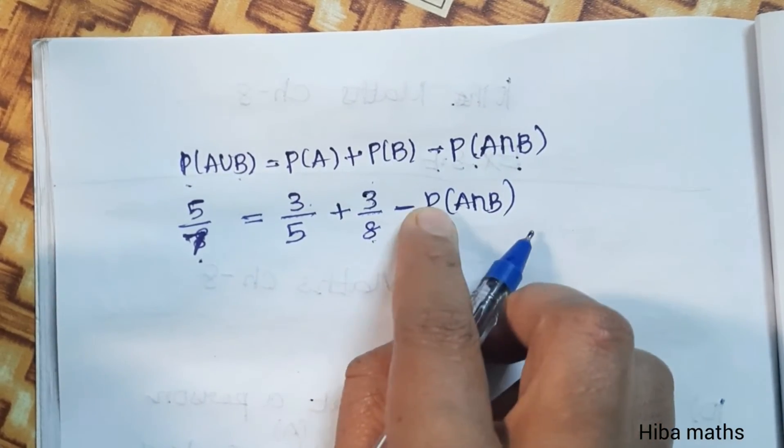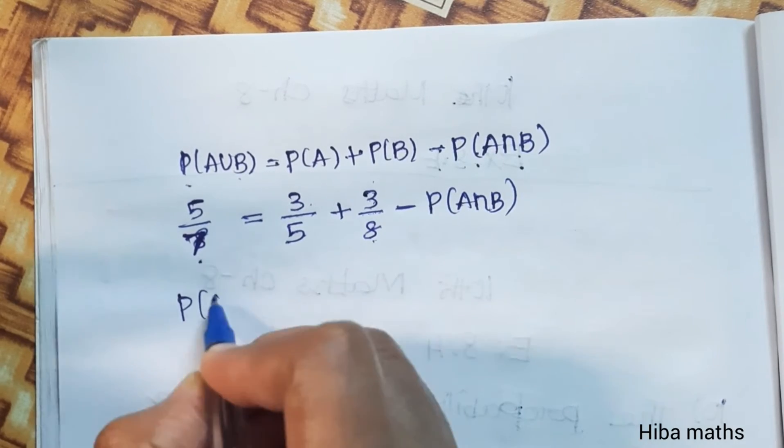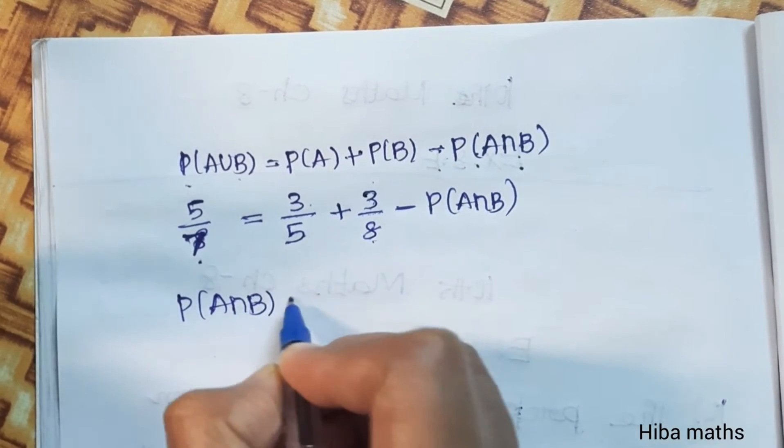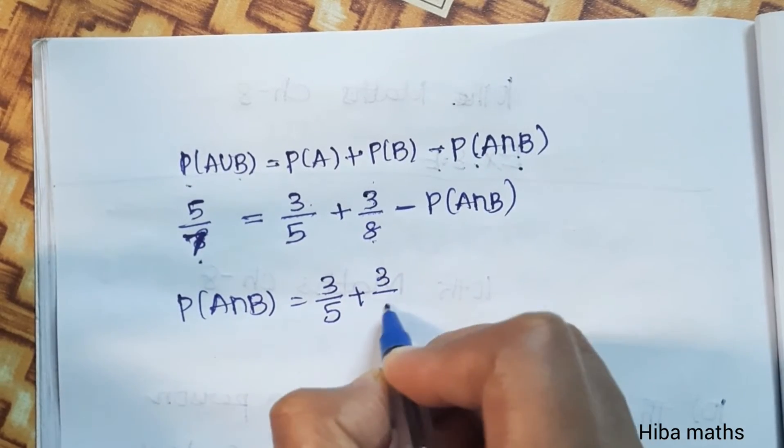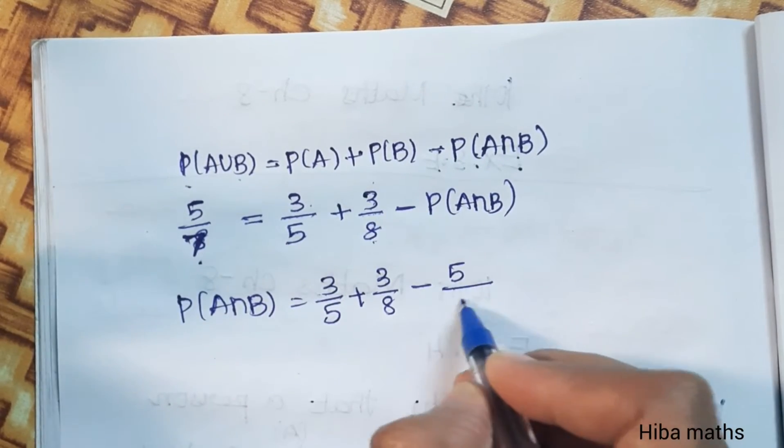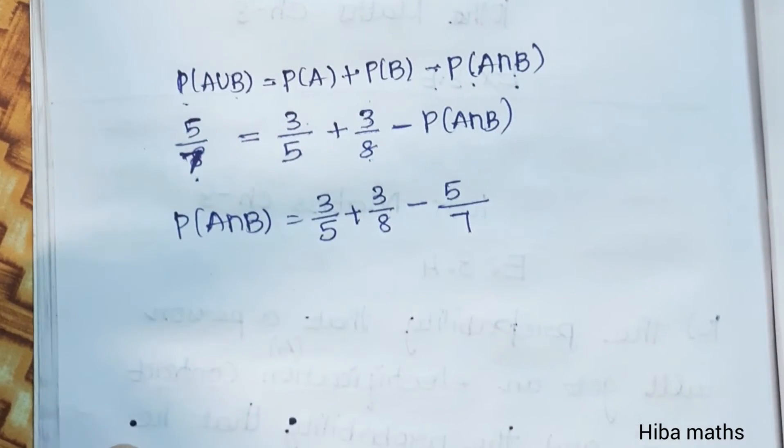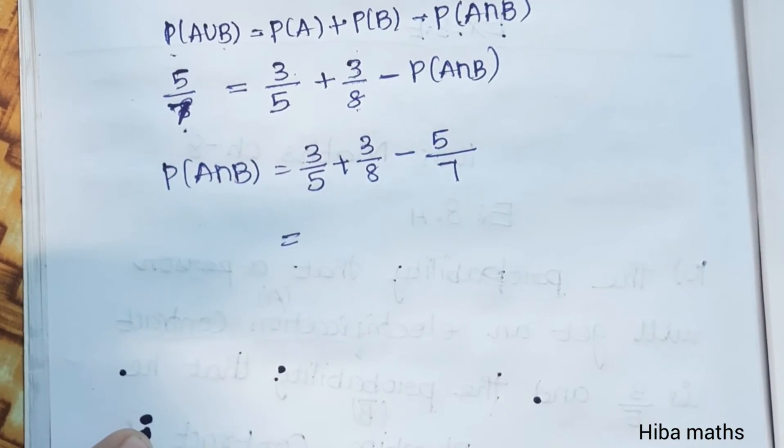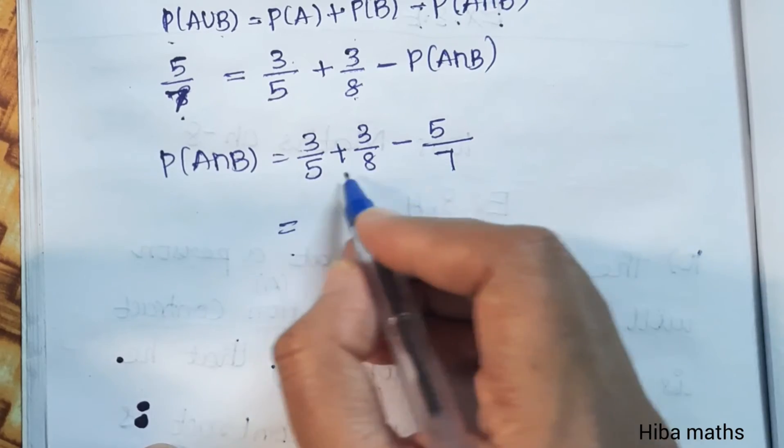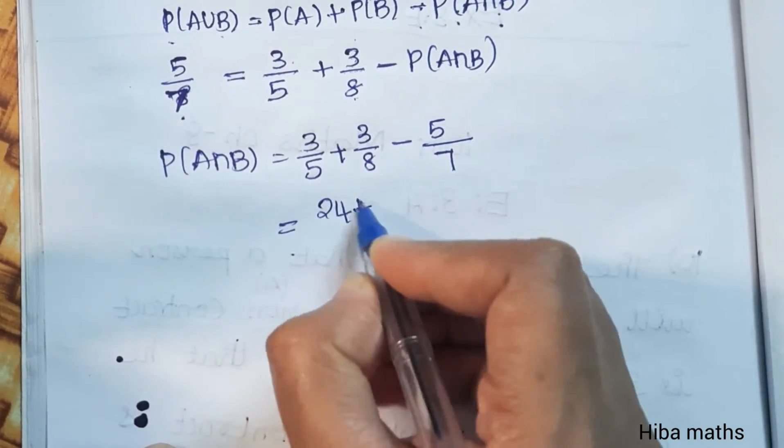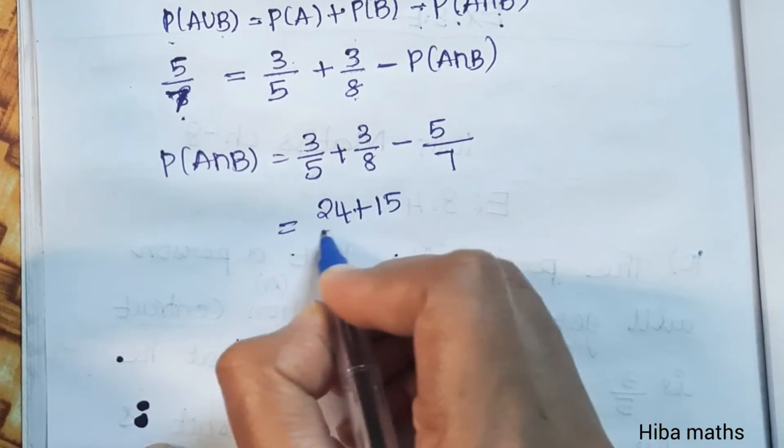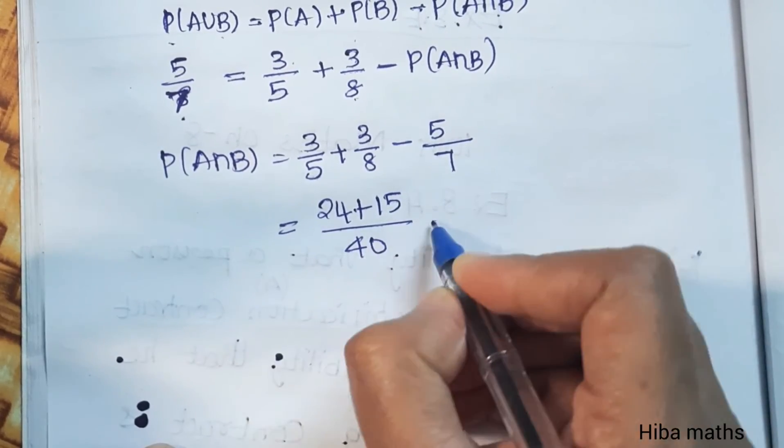To find this, move the minus to the other side - it becomes plus. So P of A intersection B equals 3 by 5 plus 3 by 8 plus - when 5 by 7 moves to the other side it becomes minus 5 by 7. Now find the LCM. 8 times 3 is 24. 5 times 3 is 15. 8 times 5 is 40.